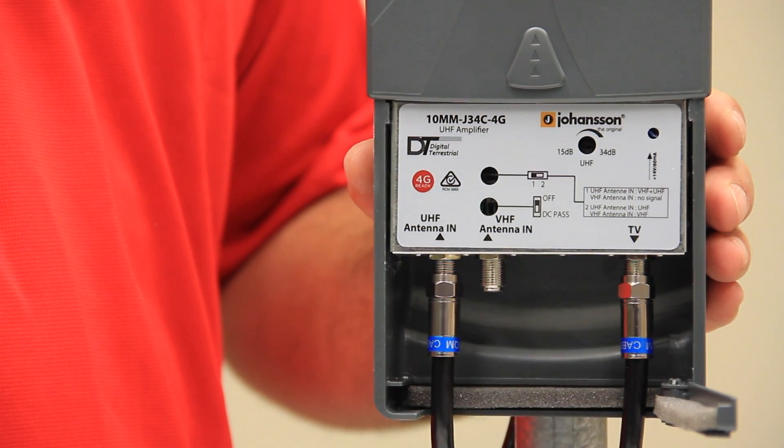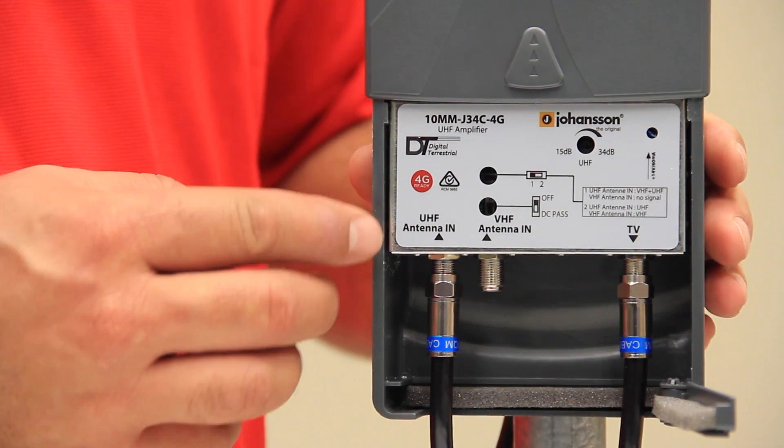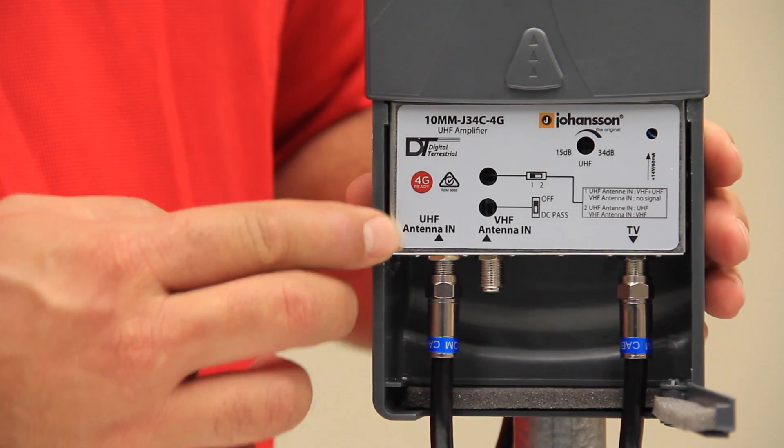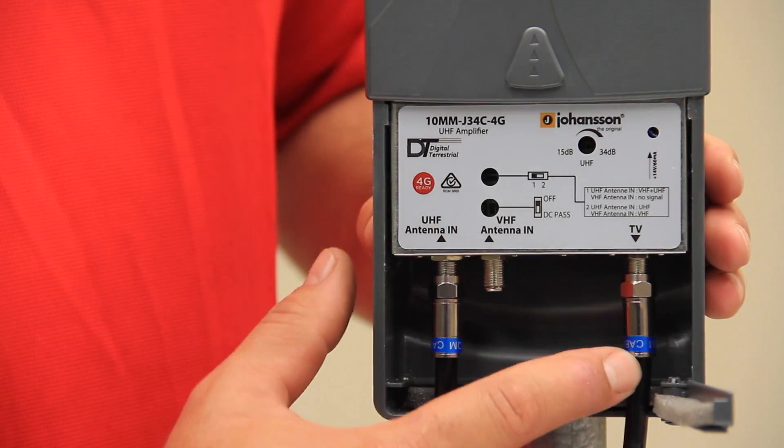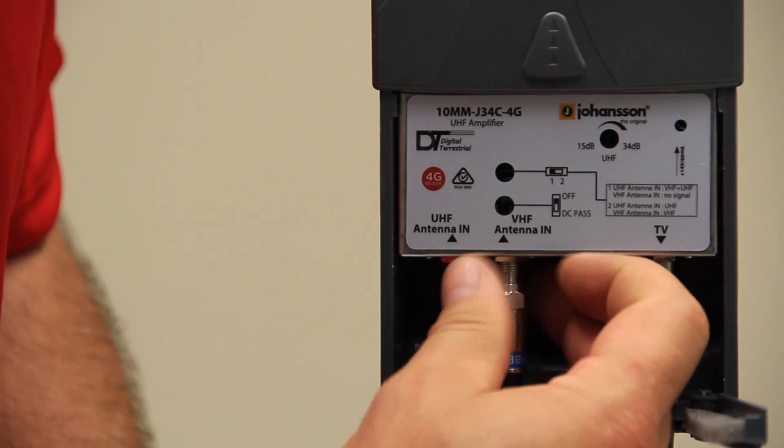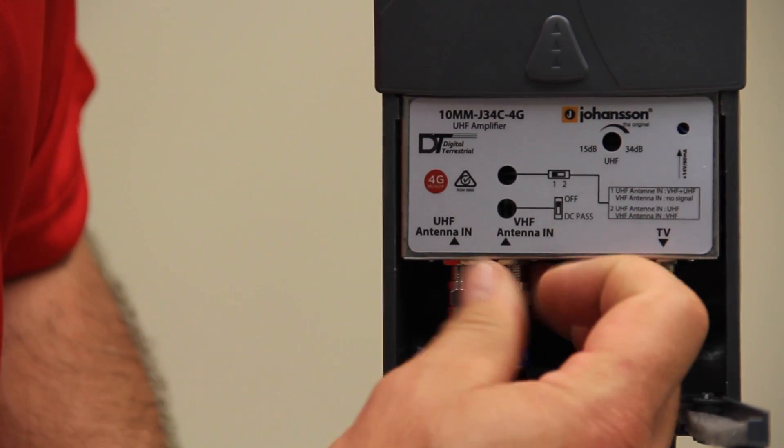It has a singular input for either UHF or combination antennas, one input for the VHF antennas and one output for the TV system. There is gain control to adjust to the suitable level for your system.